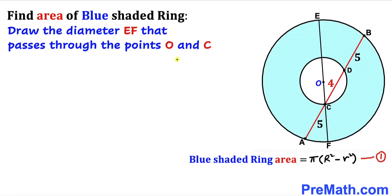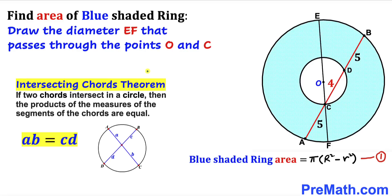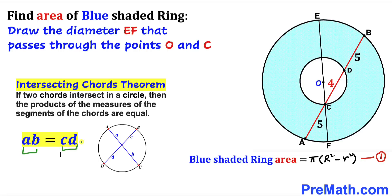Here's our next step. Let's draw some auxiliary lines. I've drawn a diameter EF that passes through center O and point C. Now let's recall the intersecting chords theorem: if two chords intersect inside a circle, then the products of their segments are equal, such that A times B equals C times D.